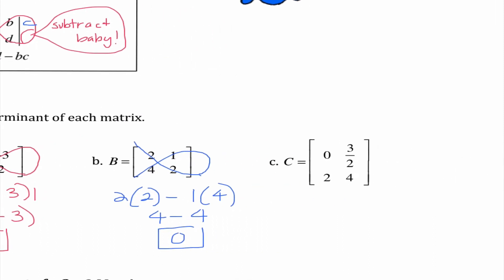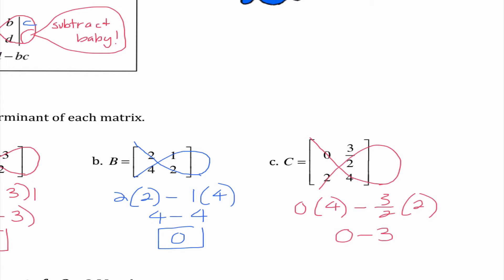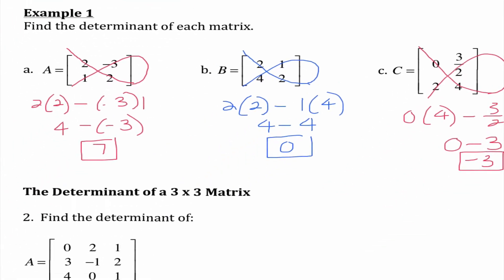Last but not least, 0 times 4 — Mr. Determifish says subtract, baby — three halves times 2. So I get 0 minus 3, which is negative 3. Finding the determinant of a two by two does not get much tougher than this. That is how we find the determinant of a two by two matrix.